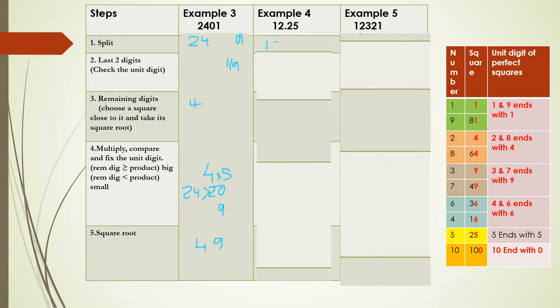After splitting, it's 12 and the last two digits are 25. So the unit digit of our square root is 5. Next, 12 is close to the square number 9, and 9 is the square of 3. Therefore, the square root of 12.25 is 3.5.